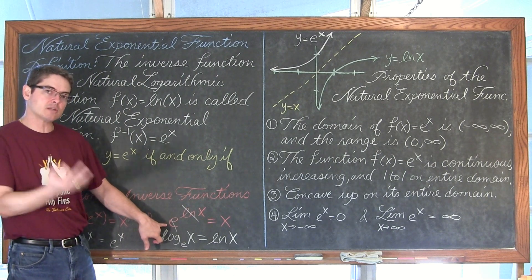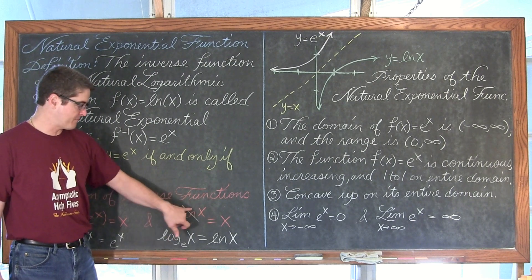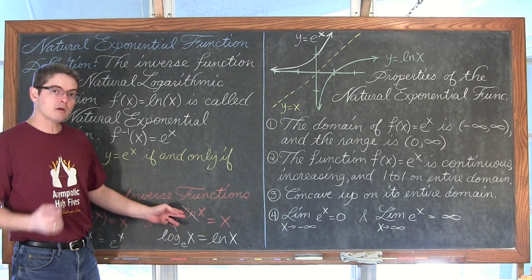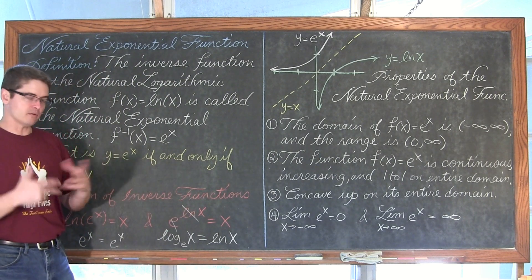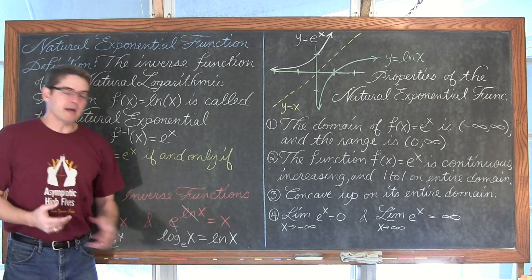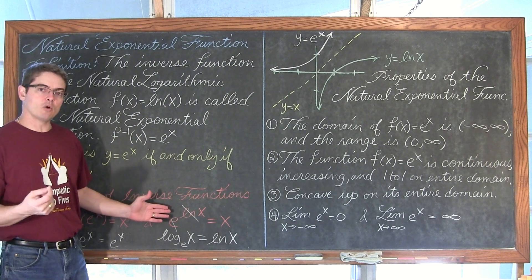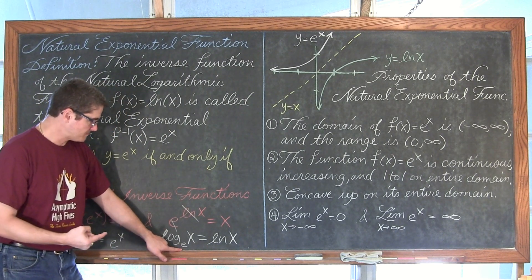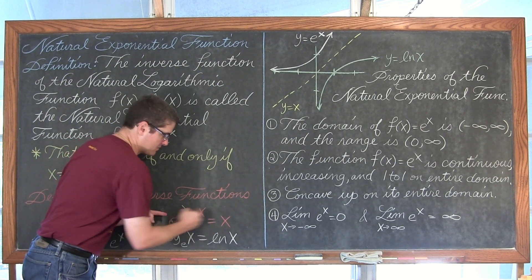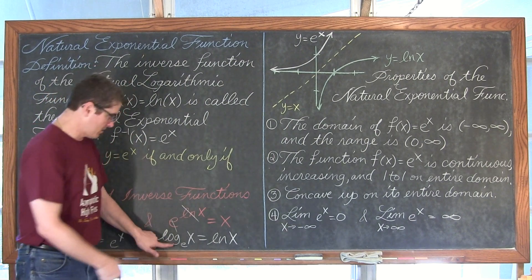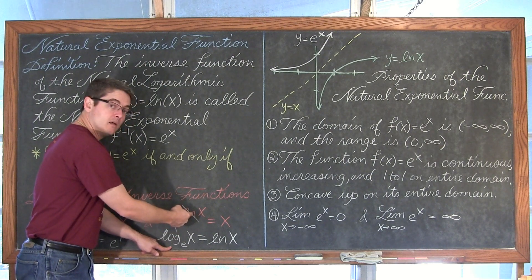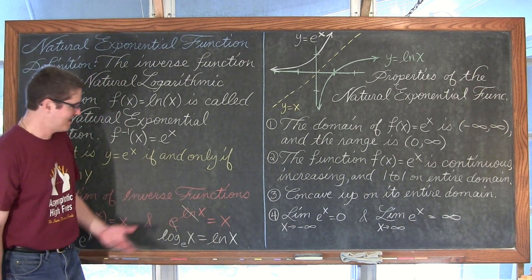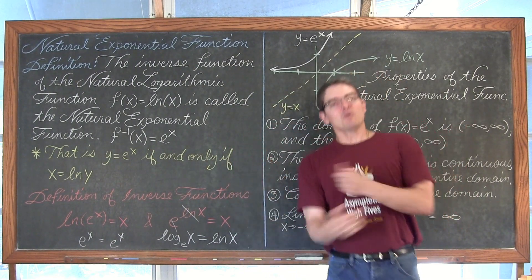And e to the natural log of x equals x. When the base e on the exponential and the log base e are stacked with no leading coefficient, they cancel out, giving x. Converting the exponential form into log form, we get log base e of x equals the natural log of x. Both compositions simplify to x, confirming once more that these are inverse functions.